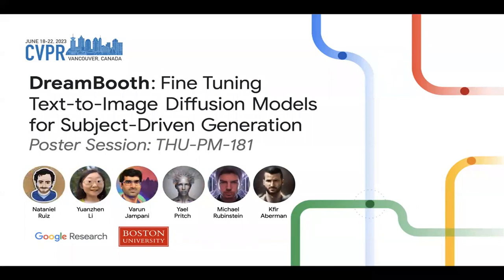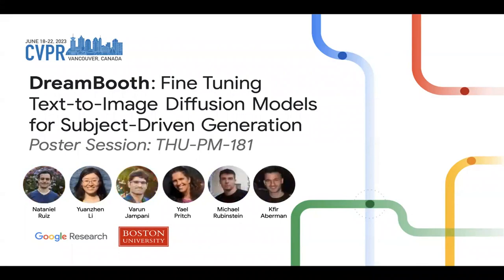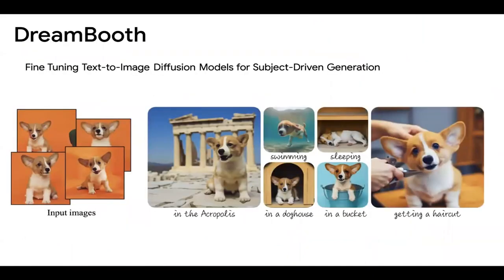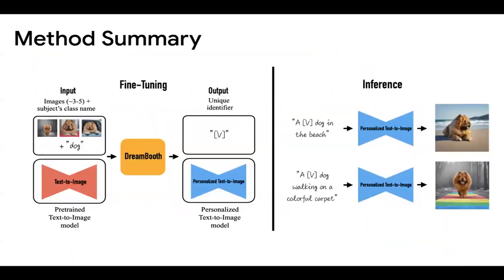My name is Natania Ries. Today I'm going to present our work, DreamBooth: Fine-Tuning Text-to-Image Diffusion Models for Subject-Driven Generation. This is work done with my collaborators at Google while I was a PhD student at Boston University. Using DreamBooth, one can generate new images of a specific subject, such as a dog, in different contexts and with different semantic modifications, given only a small number of unconstrained input images. Given a small set of three to five input images, we first generate a unique rare identifier for the subject, then fine-tune a pre-trained text-to-image model using the subject's class name and the rare identifier as text supervision. At inference time, we can use sentences such as 'a V dog at the beach' to generate new images of the specified subject in new contexts.